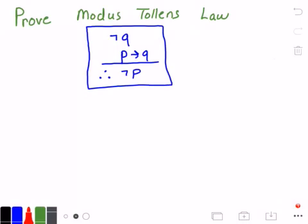The modus tollens law, if I'm pronouncing that correctly, is also called denying the consequent. I have this law in the blue rectangle here, and it states that if not Q is true, and if P implies Q is true, then not P is also true.